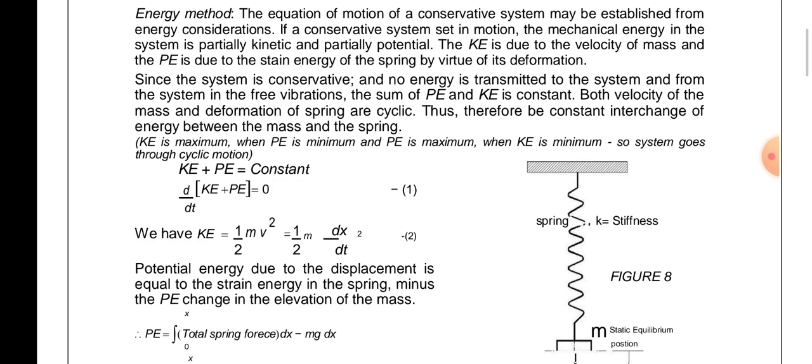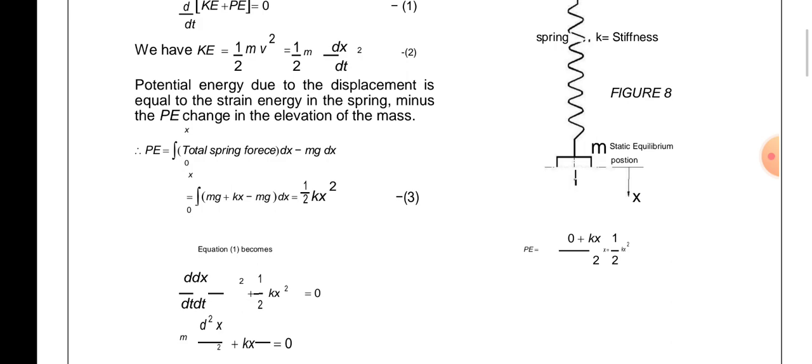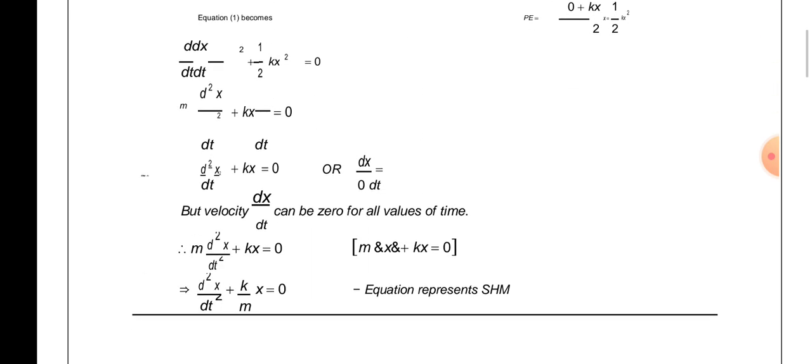Kinetic energy = ½m(dx/dt)². Potential energy due to deflection equals strain energy in the spring minus the change in potential energy due to elevation. Integrating from 0 to x: PE = ∫₀ˣ(mg + kx - mg)dx = ½kx². Differentiating KE + PE = constant gives: d²x/dt² + (k/m)x = 0, since dx/dt (velocity) cannot be zero for all time.